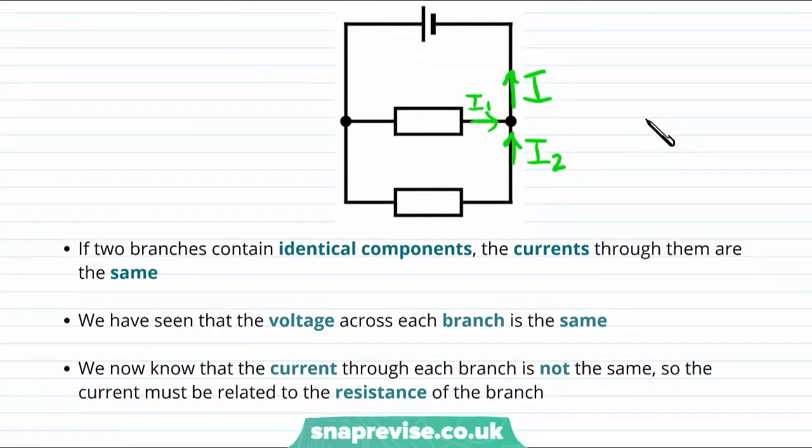A very useful fact to remember is that if two branches contain identical components, then the currents through these identical components are the same. We have seen that the voltage across each branch is the same. We now know that the current through each branch is not the same, so we guess that the current must be related to the resistance of the branch.